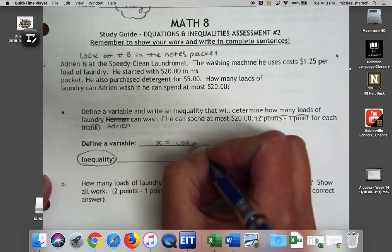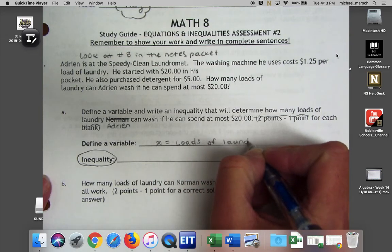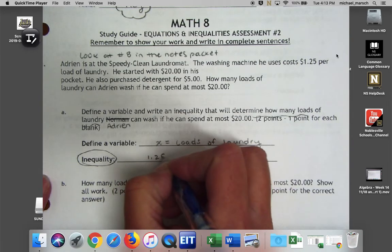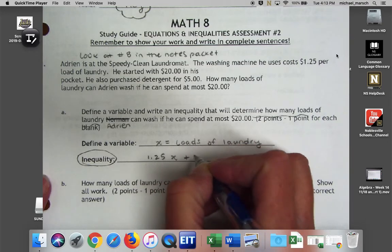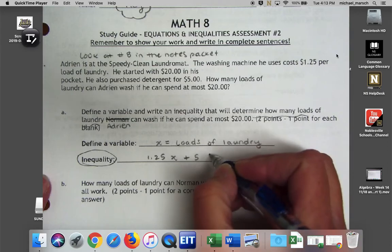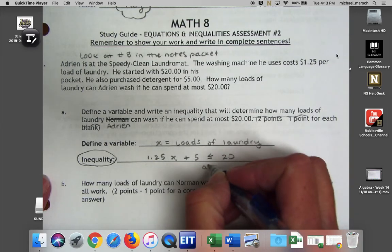We have to define a variable and write an inequality that will determine how many loads of laundry he can wash. That tells us right there that our variable is going to be loads of laundry. We know that it costs $1.25 per load of laundry plus the $5 he spent on detergent, and it has to be at most $20.